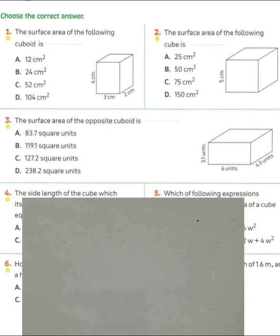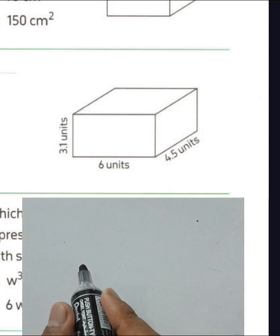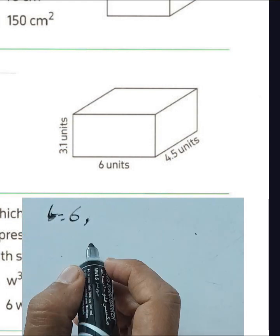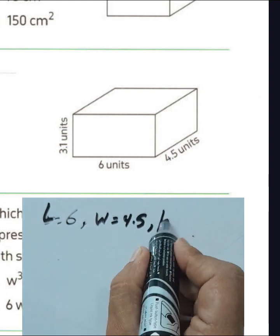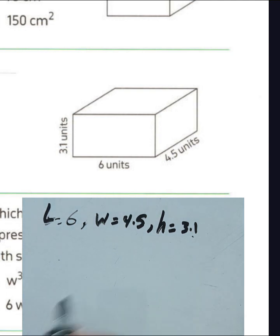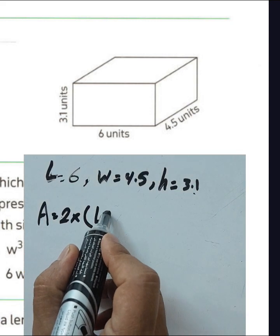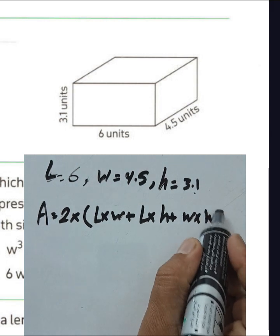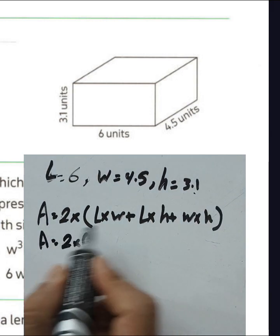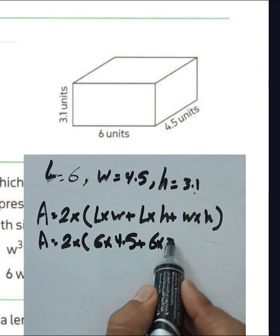Question number three: the surface area of the opposite cuboid is? He gives us the dimensions: length equals 6 units, width equals 4.5 units, and height equals 3.1 units. We know the rule. Surface area equals 2 times (length×width + length×height + width×height).